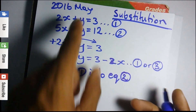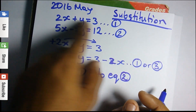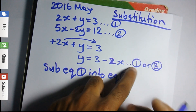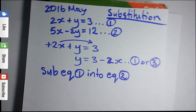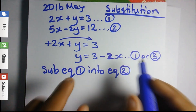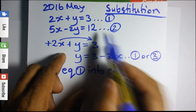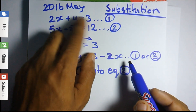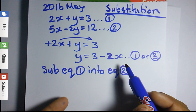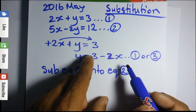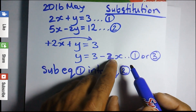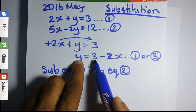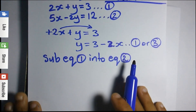Why do we substitute equation 1 into equation 2? Remember, if I had to substitute equation 1 back into equation 1, everything would cancel out and we wouldn't be left with anything. So what we need to do is substitute equation 1 into equation 2. So wherever I see Y in equation 2, I'm going to write 3 minus 2X. Let's do that.